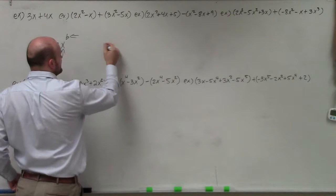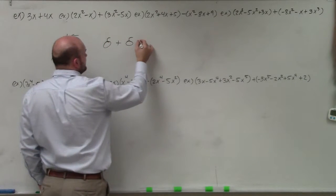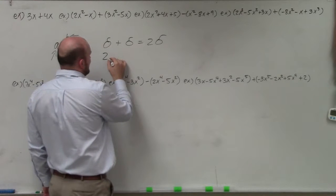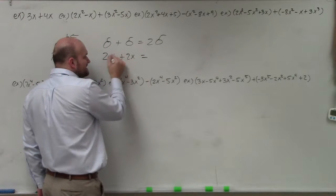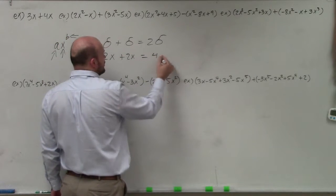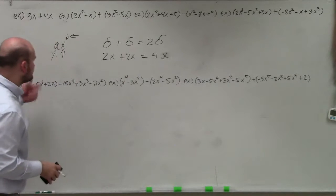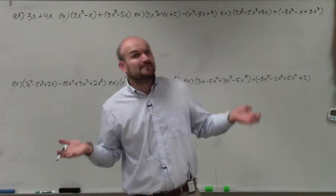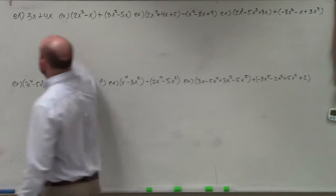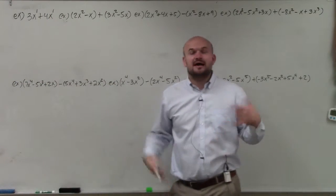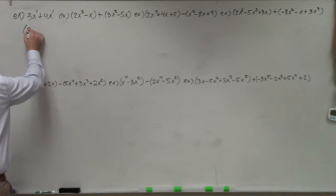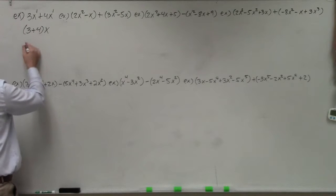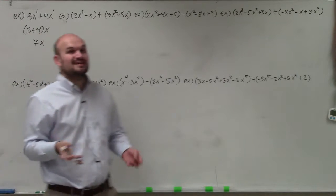Think of it as one apple plus one apple equals two apples — we keep the apple as the base. In the same respect, if I have 2x plus 2x, we keep the base x the same and just combine our coefficients, which gives us 4x. So we've got to make sure the bases are the same and the powers are the same — in this case both are x to the first. We can combine them, so 3 plus 4 times x gives us 7x. Therefore, 3x plus 4x equals 7x.